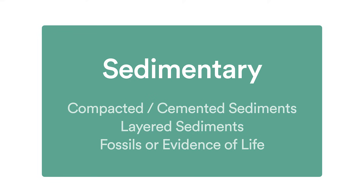What about sedimentary rocks? These are rocks that form generally from compacted and cemented sediments. You're going to look for little grains of sand, pebbles, clay, and silt — different sized chunks of rock that have been squeezed together to form one larger rock. We might also look for those sediments to be forming in layers, and we might keep our eye out for some sort of fossils or other evidence of life, including things like footprints, worm trails, etc.